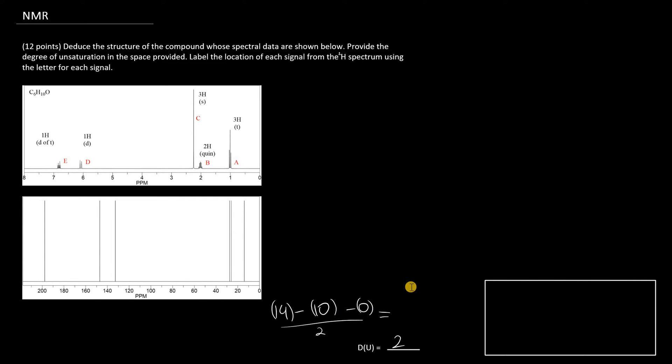So with a DU of two, it's likely we have two pi bonds here, because it doesn't seem like we have an alkyne, and it doesn't look like we have a benzene ring either.